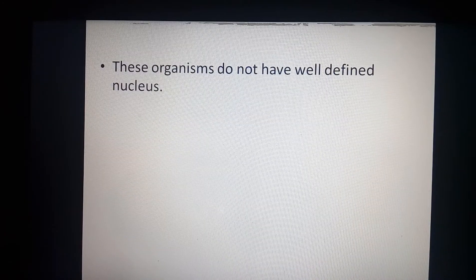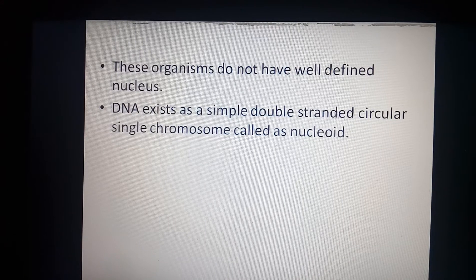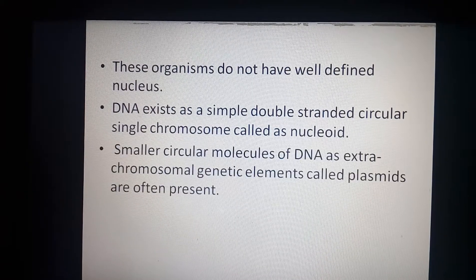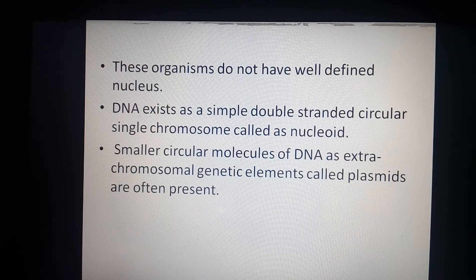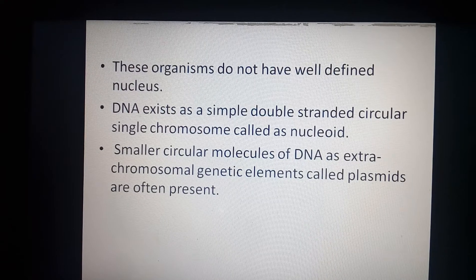The organisms do not have a well-defined nucleus. DNA exists in a simple double-stranded circular form, residing in a single chromosome-like structure called the nucleoid. A smaller circular molecule of DNA is also present inside the prokaryotic cell, called a plasmid. A plasmid is extra-chromosomal genetic material present inside the prokaryotic cell.